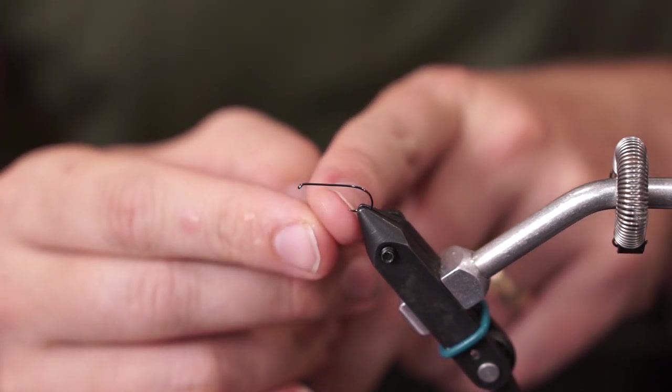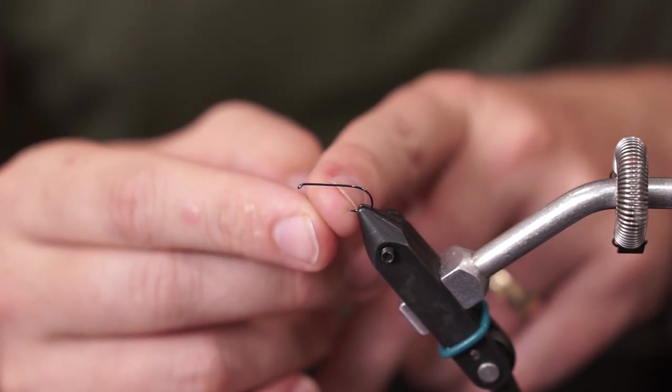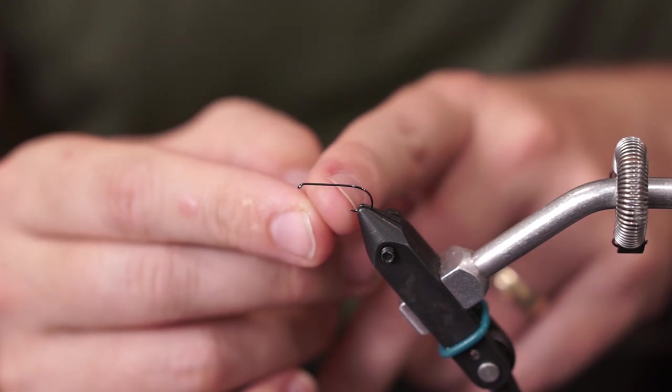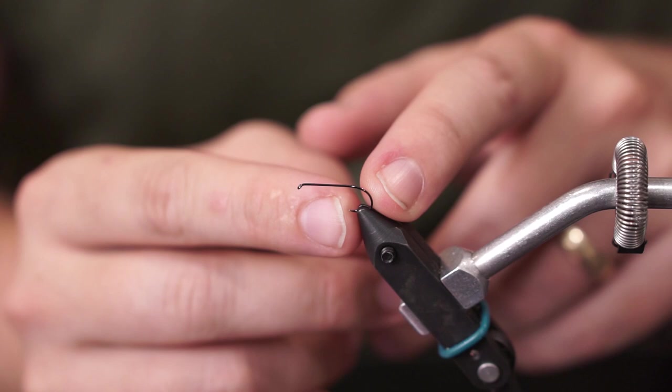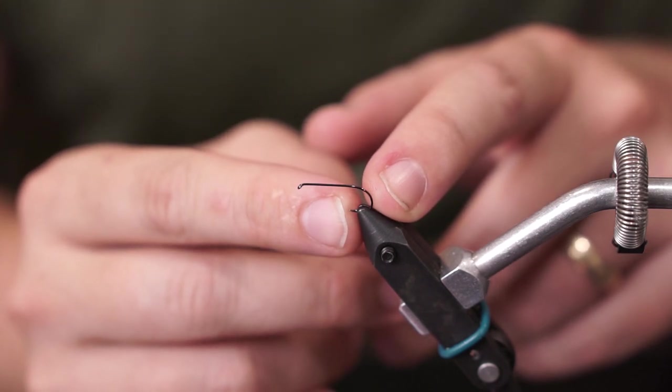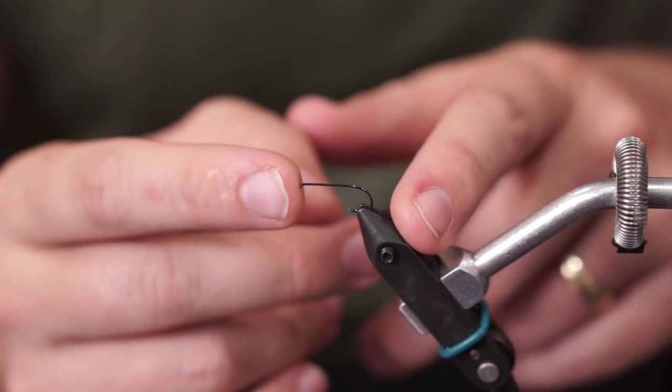As always I have removed the barb of this hook before I've started tying. This makes it a lot easier to not only debarb the hook but remove the hook from both the fish and yourself should an accident occur.